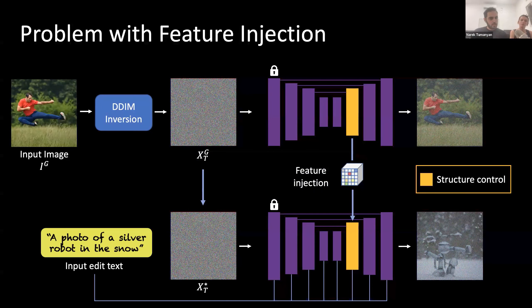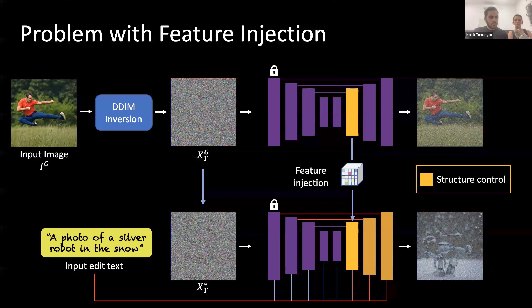The first thing to notice is that even though these features encode the structure of the input image, they are very coarse in a coarse resolution. If we want to generate an image in higher resolution, we should also keep structure details at higher resolution. Another reason is that in the higher-resolution blocks of the decoder, there are skip connections that interfere with the generation and can distort the structure we initialized at coarse resolution, as well as the text input through the cross-attention blocks. Our solution is to not only control the structure at coarse resolution, but to continue controlling it in all higher resolutions of the decoder.